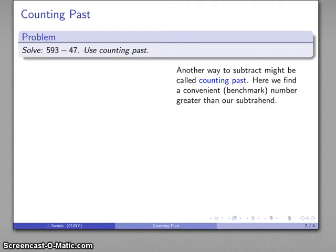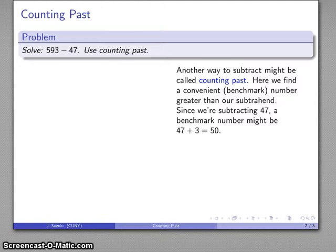Let's consider this: we want to find a convenient benchmark number, something that's easy to work with. Here I'm subtracting 47, so a convenient benchmark number that's a little bit more than 47 is going to be 50. That's 3 more than 47, so I'll start by subtracting 50 because that's easy to work with. 593 minus 50 is 543.